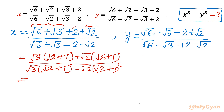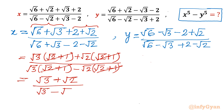So we can write x equal to (√3 + √2) divided by (√3 minus √2). This is our simplified form of x.